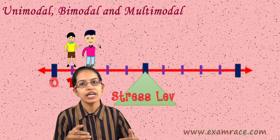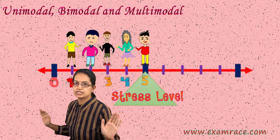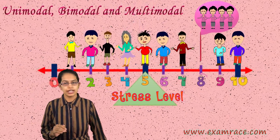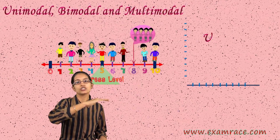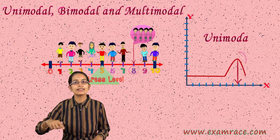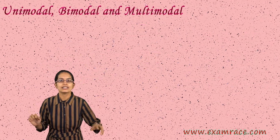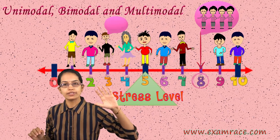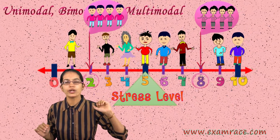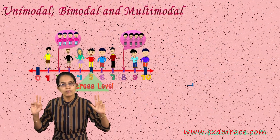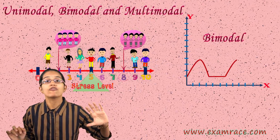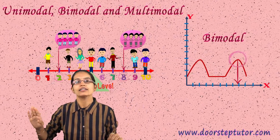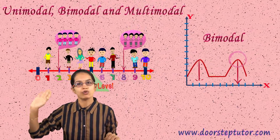As we said, we have 10 students with different stress levels. There are 4 students having a stress level of 8. So what is the distribution? It is unimodal — there is just one peak. Rather than saying there are 8 students, there are 4 students who have a stress level of 4. I can say there are 2 peaks: stress level of 8 with 4 students, and stress level of 2 with 4 students.